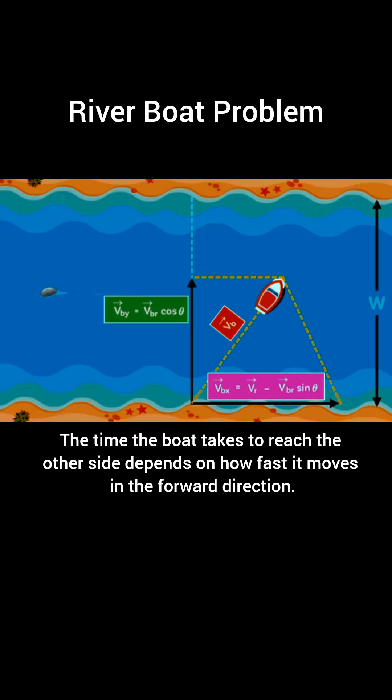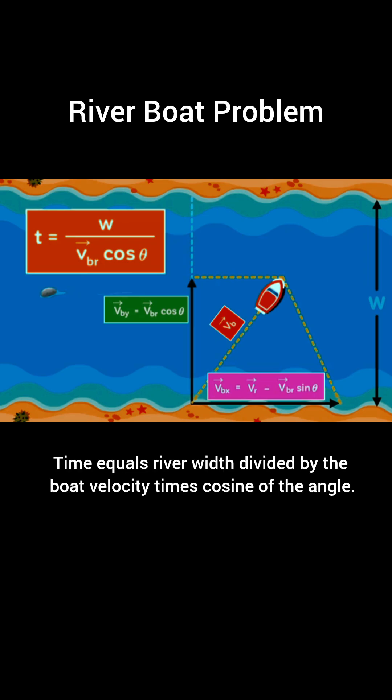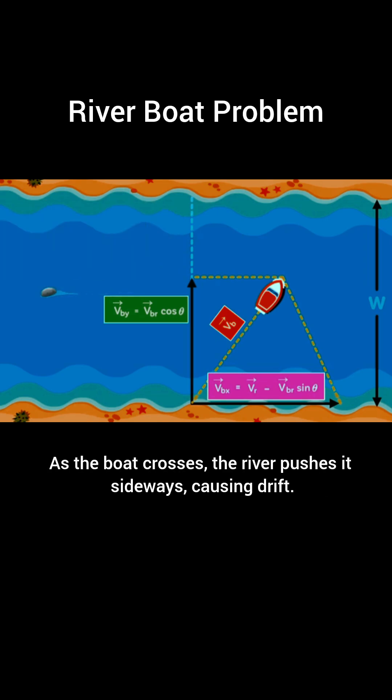The time the boat takes to reach the other side depends on how fast it moves in the forward direction. This is given by: time equals river width divided by the boat velocity times cosine of the angle.